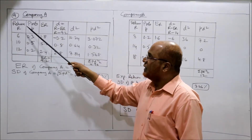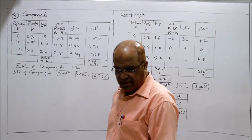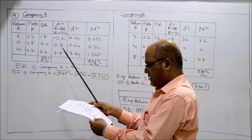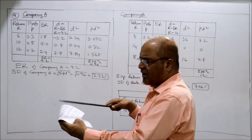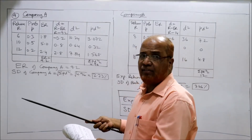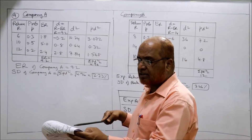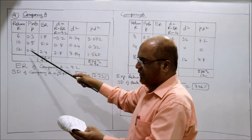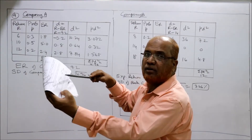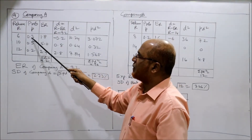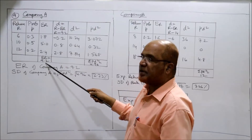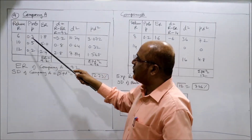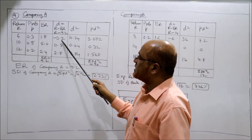First, Company A. The returns are given: 6, 10, 12. The outcome (event) we are not concerned with — we directly take the returns: 6, 10, 12. The probabilities are 0.3, 0.5, 0.2 as given in the problem for Company A. Multiply the return with the probability to get the expected return — the expected return is 9.2%.